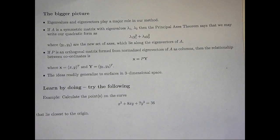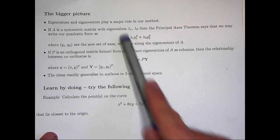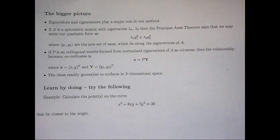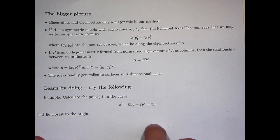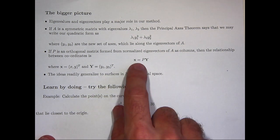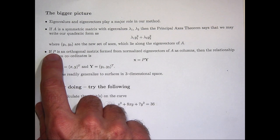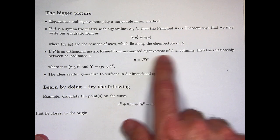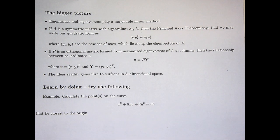Let's look quickly at the bigger picture. You can see that eigenvalues and eigenvectors played a major role in our method. If I have a quadratic form and a symmetric matrix, then the Principal Axes Theorem says that I can write the quadratic form as the sum of squares, where y1, y2 is the new set of coordinates or axes. The lambda 1 and lambda 2 are the eigenvalues of A. In particular, the y1, y2 axis lie along the eigenvectors of A. The relationship between the two sets of coordinates can be formed through this orthogonal matrix, which has the normalized eigenvectors of A as the columns. I've shown you the ideas in two dimensions only, but the idea is readily generalized to three-dimensional space.